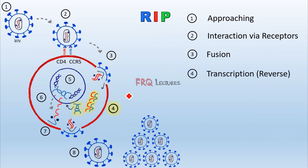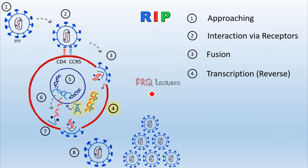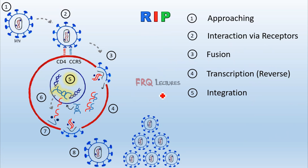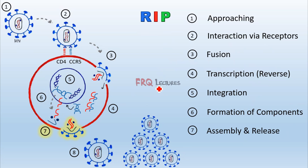In the fourth step, reverse transcription occurs. HIV belongs to the retroviruses — 'retro' meaning backward — because they undergo reverse transcription. The resulting viral DNA enters the nucleus and integrates with the host DNA using the integrase enzyme. This is called proviral DNA, and it hijacks the cellular machinery to form all components for the daughter HIV. Finally, components are assembled, exit the macrophage while stealing a portion of the cell membrane, and we get multiple daughter HIV particles.